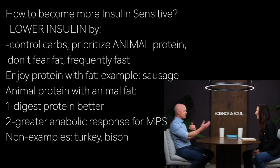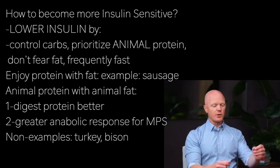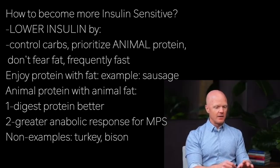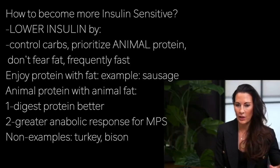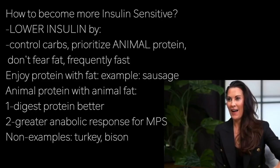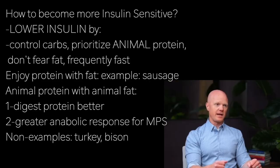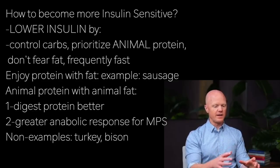When humans eat protein alone, we do not digest it as well and it's not as anabolic. Human studies have shown that if protein is consumed with fat, we digest the protein better and we have a greater anabolic response for muscle protein. So if you're eating really lean turkey or really lean beef like bison, you're probably not getting the fat in conjunction with it and you're not going to be able to utilize that protein as well. Be liberal with the fat, even sometimes adding a little to it. In nature, protein comes with fat — that's how we should eat it.